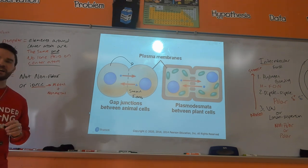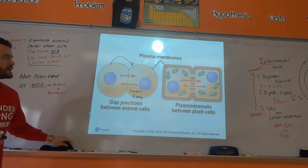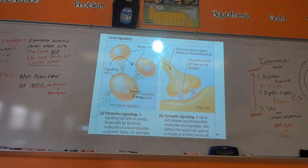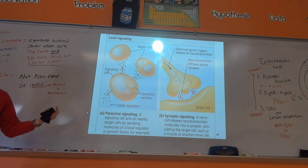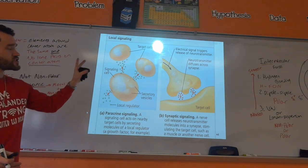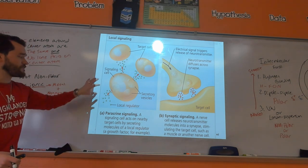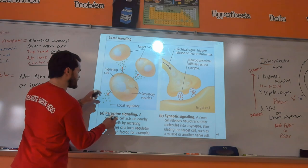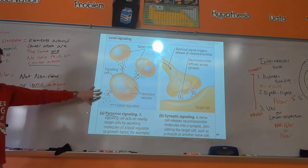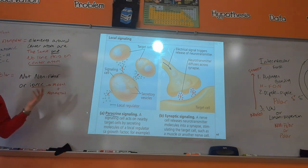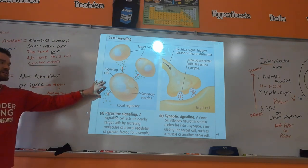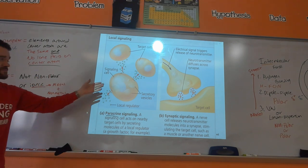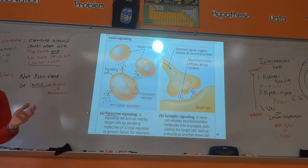There are two general categories of signaling. Gap junctions and plasmodesmata fall into local signaling. There are two other kinds of local signaling: the first is paracrine signaling, where cells right next to each other send signaling molecules — this could be a local regulator like a growth factor signaling cells to grow, or telling cells to make more of a certain hormone.